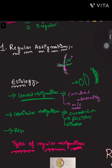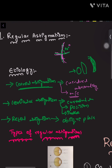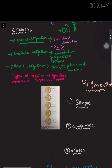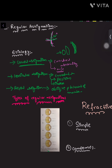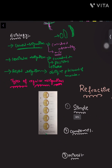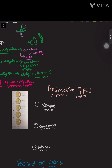The last cause is retinal astigmatism, which occurs due to abnormal oblique placement of the macula, which receives the light rays. These are the etiologies of regular astigmatism. Now we will see the types of regular astigmatism, which are divided into simple, compound, and mixed.